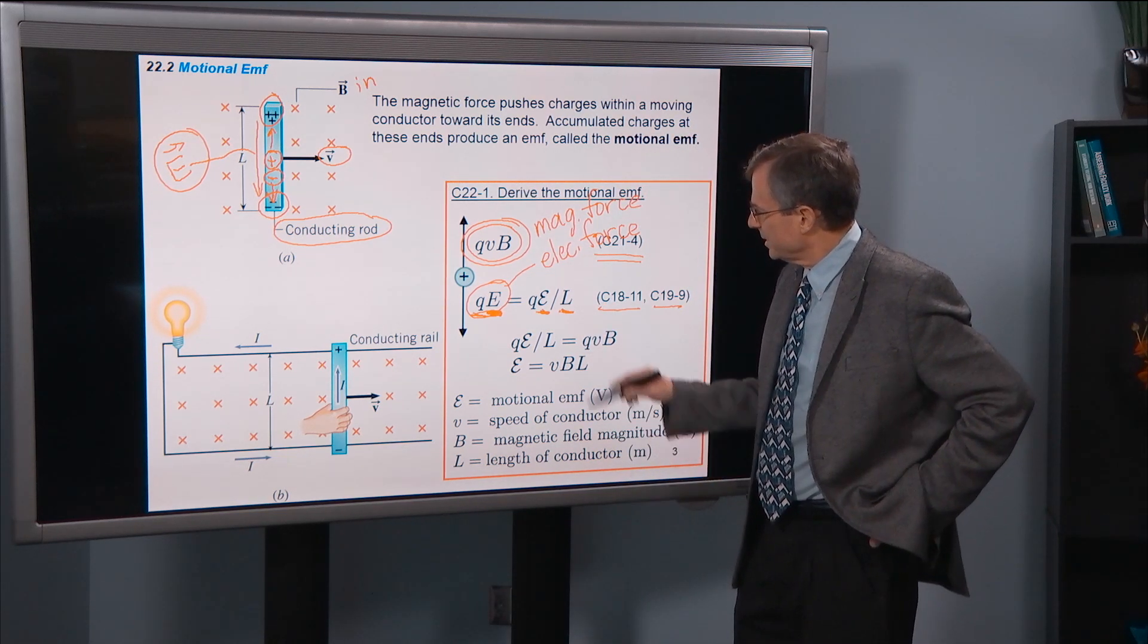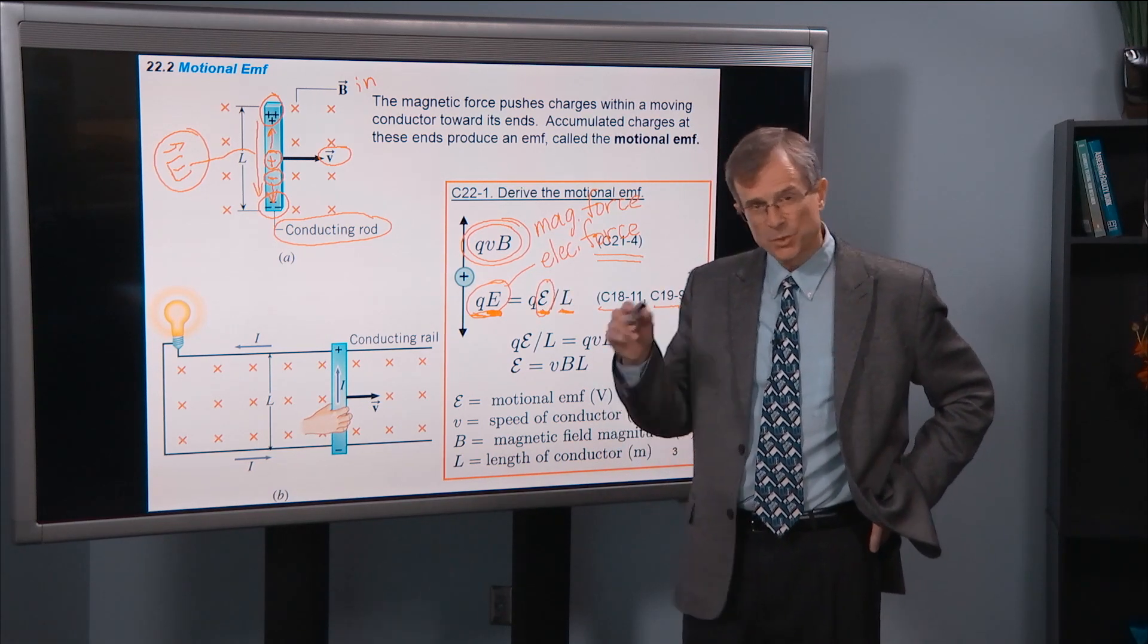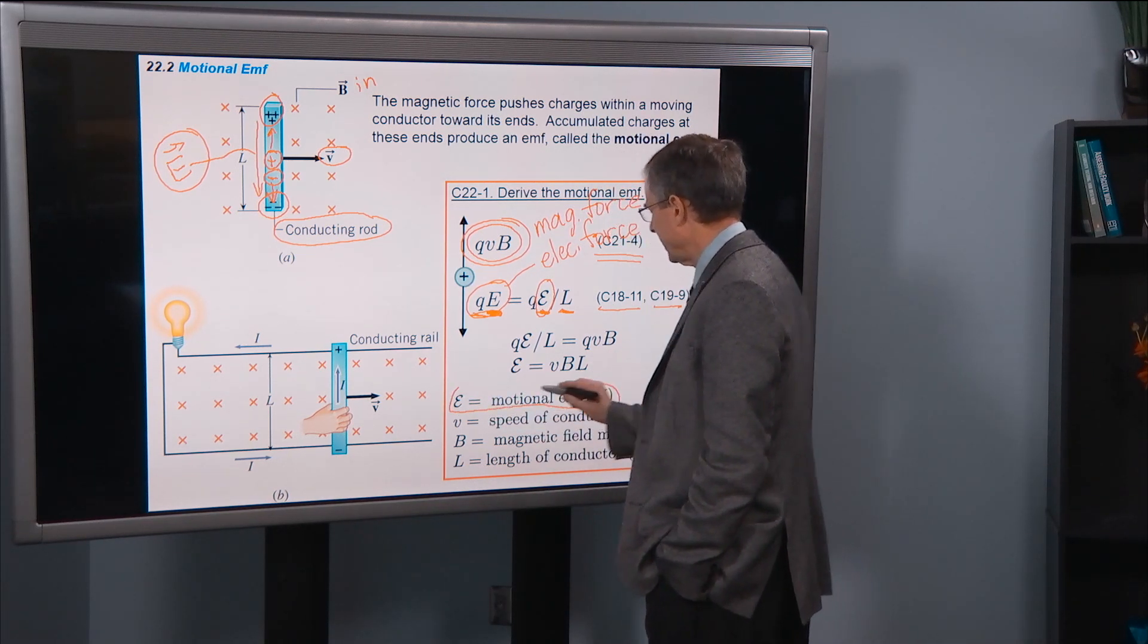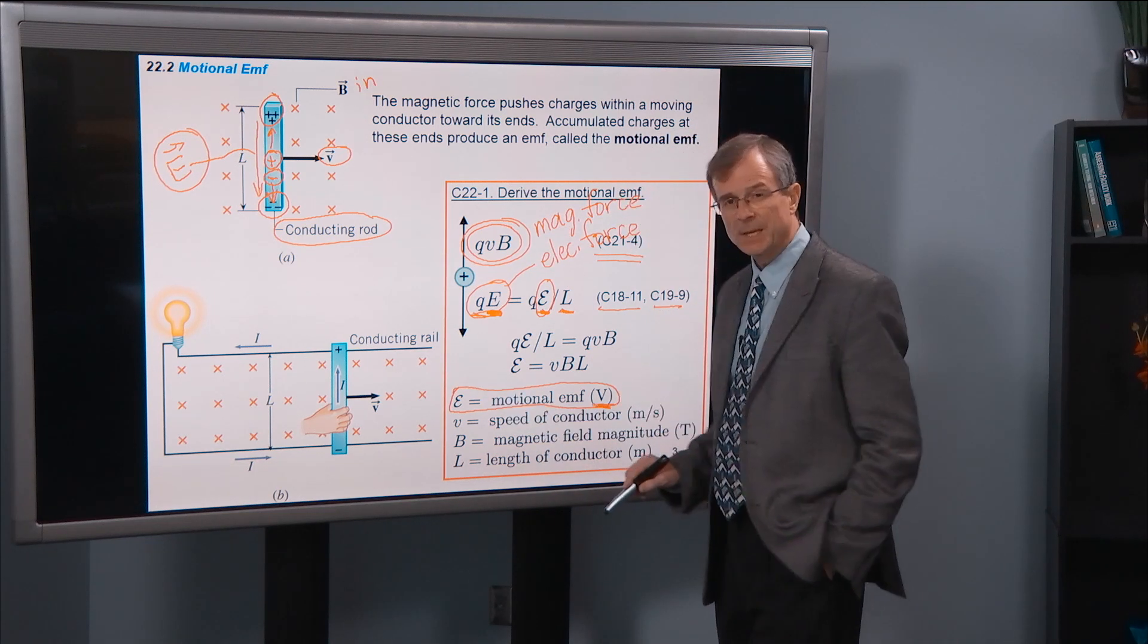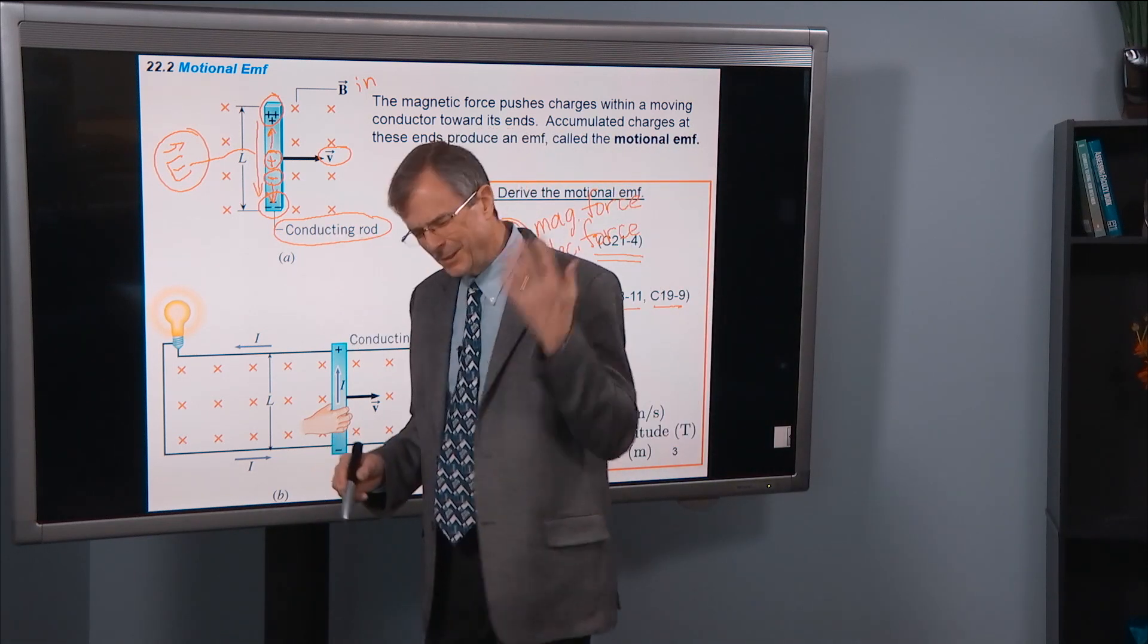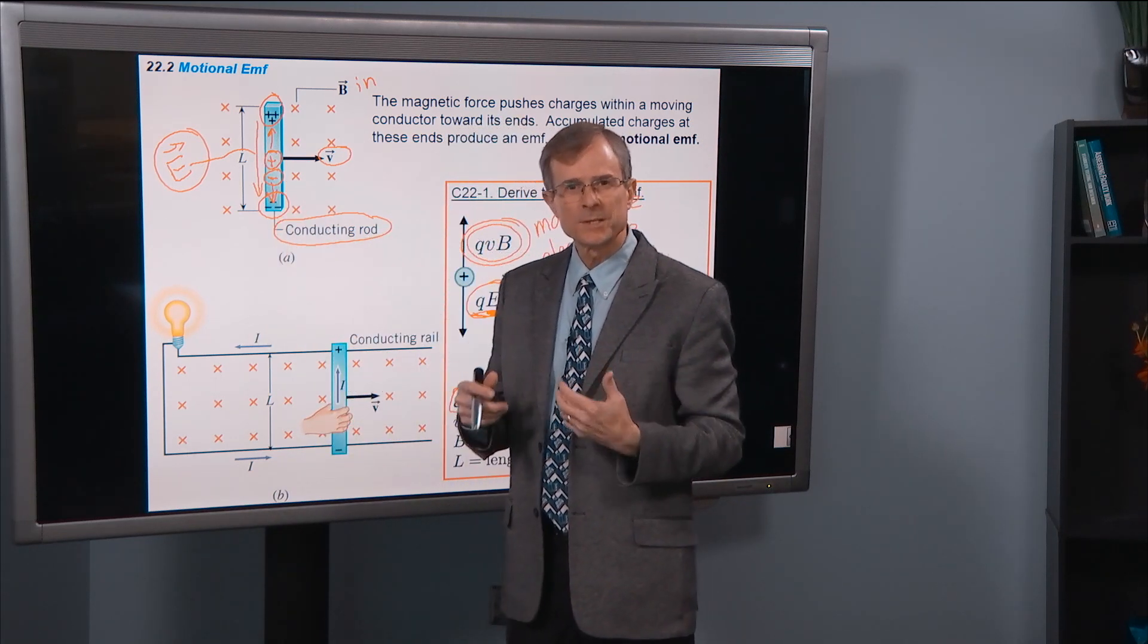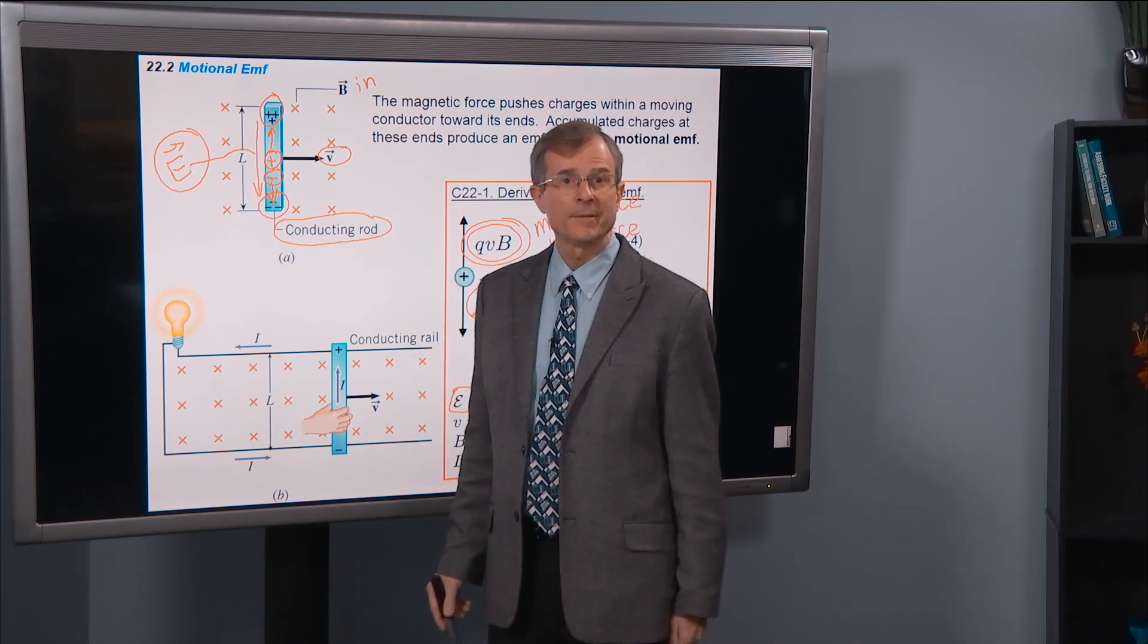And we're going to denote that voltage as a script E, the EMF. And that is the actual motional EMF that we're looking to calculate. It's measured in volts. It's just an EMF like a battery. So you can think about the movement. The curious thing about this is that all you have to do is move that metal rod through a magnetic field, and all of a sudden you've got a battery out of the deal. You've got something that can drive some current.